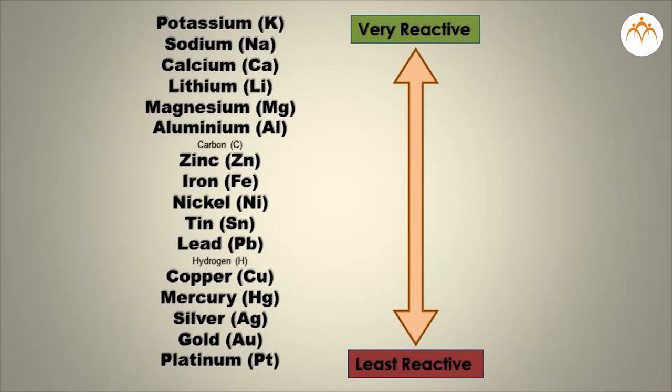It means that metallic iron is more reactive than metallic copper. Scientists have developed the reactivity series by doing many experiments of displacement reactions. The arrangement of metals in the increasing or decreasing order of reactivity is called reactivity series of metals.